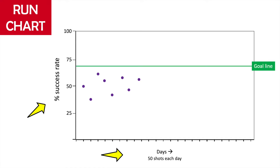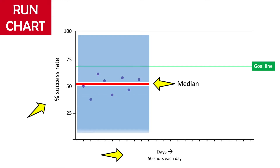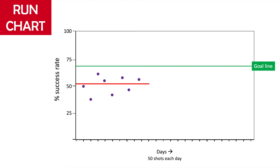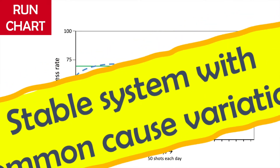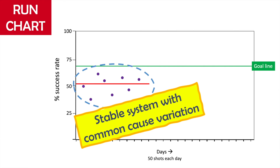His goal is to increase it to 70%. His performance over the last eight days has a median of 52%, with some days better than others. The centerline on a run chart is a median — the center value, with half of the values on one side and half on the other. He used the data for the last eight days to calculate the centerline. Now looking at his performance using a run chart, AJ realizes it is a stable system, with common cause variation only.